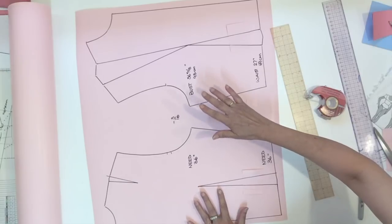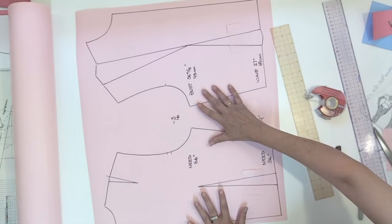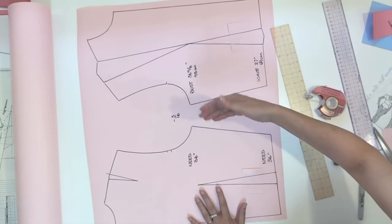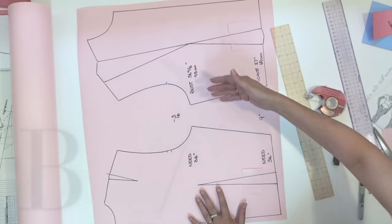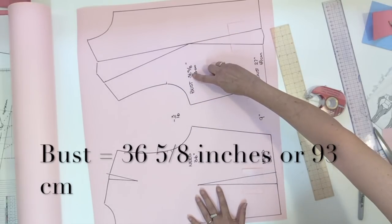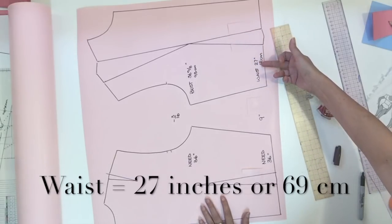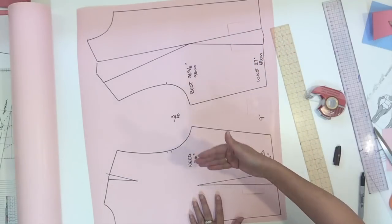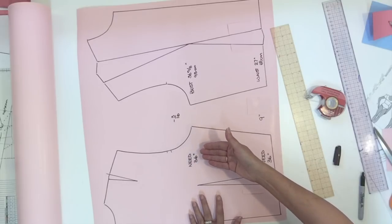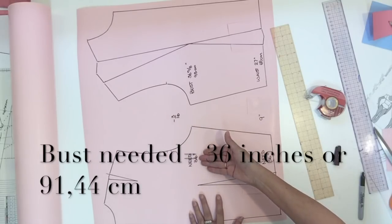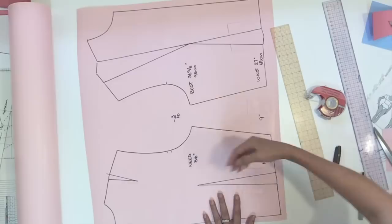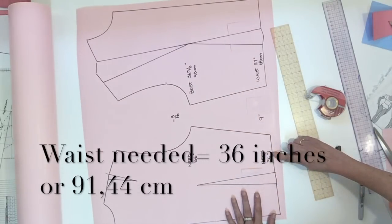Today I'm starting from my basic block size 10 and this block has a bust measurement all around of 36 inches and 5/8 and the waist measurement is 27 inches. Now the measurement the person needs is 36 inches for the bust measurement and 36 inches for the waist.